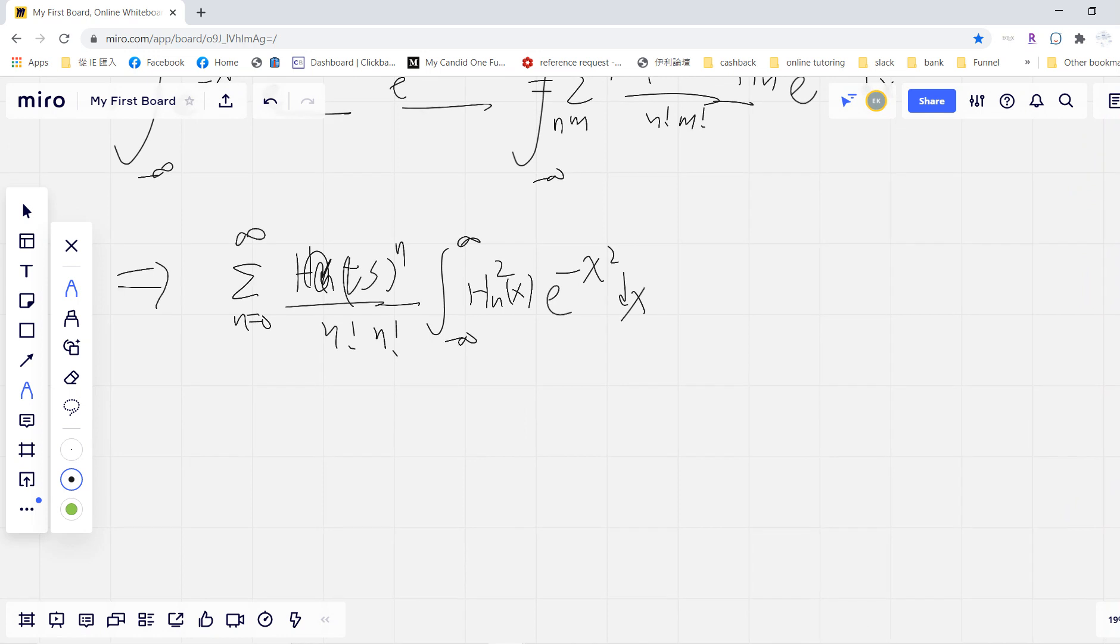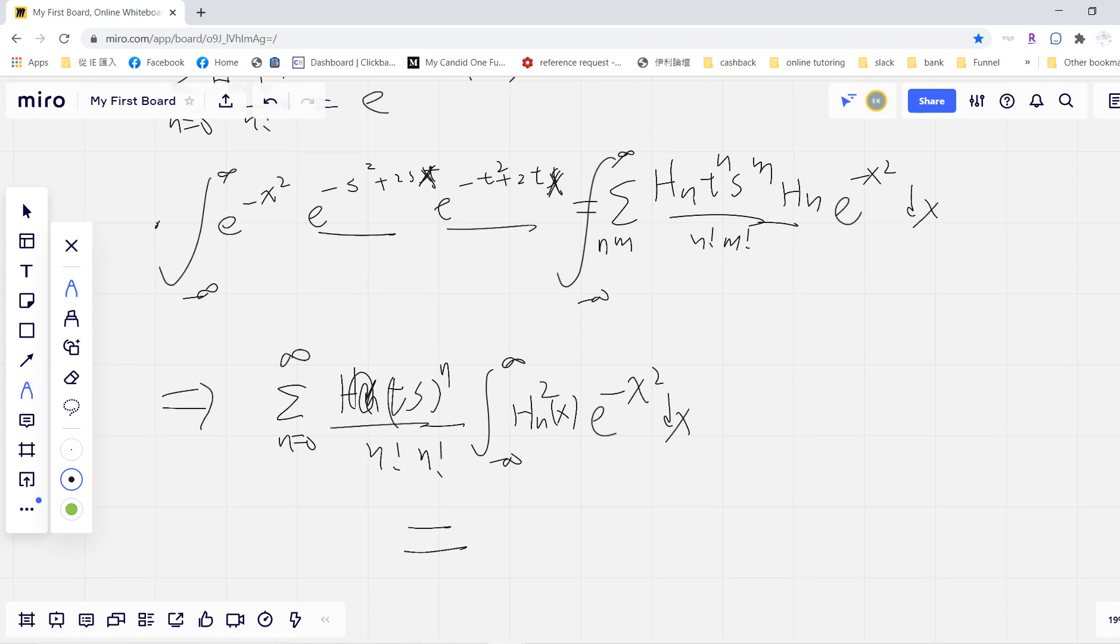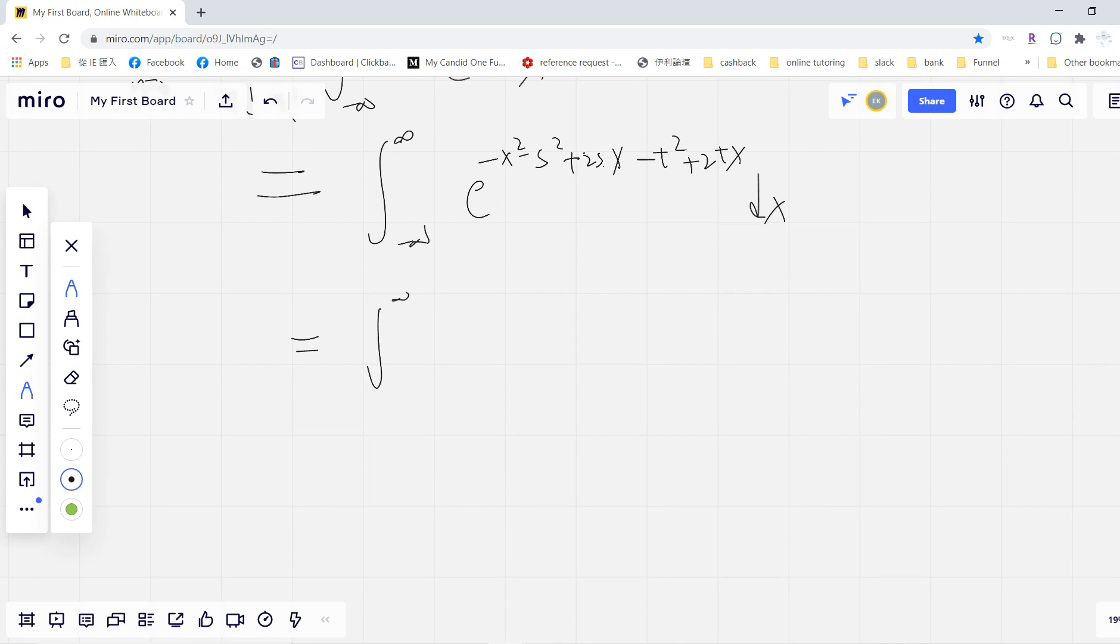Okay, and now this one will equals to the left-hand side. So left-hand side is basically the integral of e^{-s^2 + 2sx - t^2 + 2tx} dx. Okay, so if you see carefully, then this one can be written as exponential negative (x - s - t)^2.